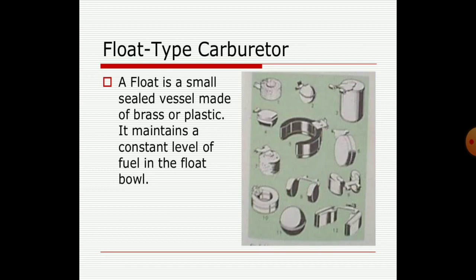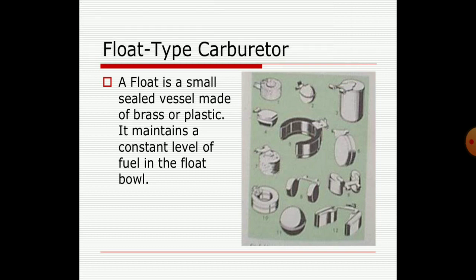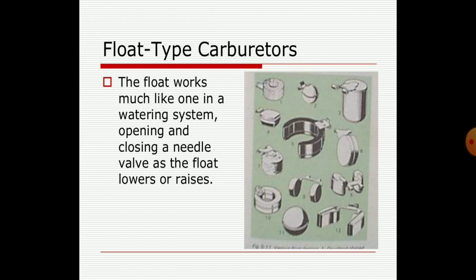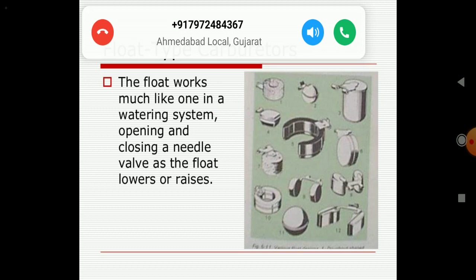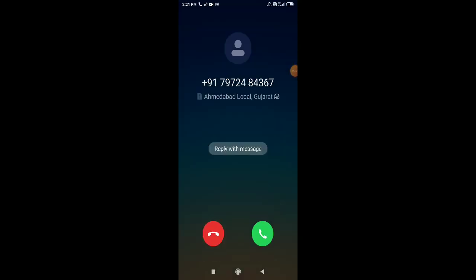The float type carburetor has a small feed vessel made of brass or plastic that maintains a constant level of fuel in the float bowl. The main components are the venturi, the float chamber, and the float itself. The float type carburetor works much like a watering system, with opening and closing of the needle valve as the float lowers or rises. These types of carburetors are generally used when there is a specific fuel-delivery requirement.